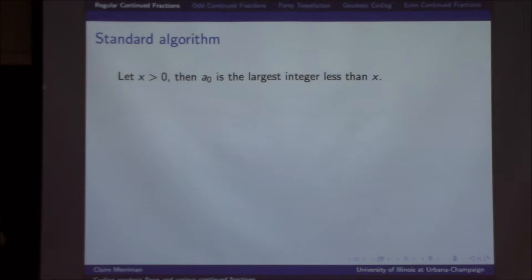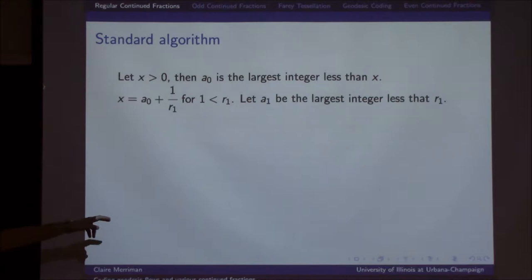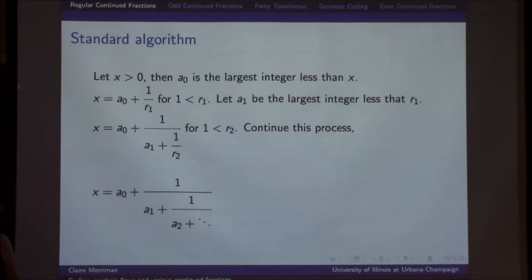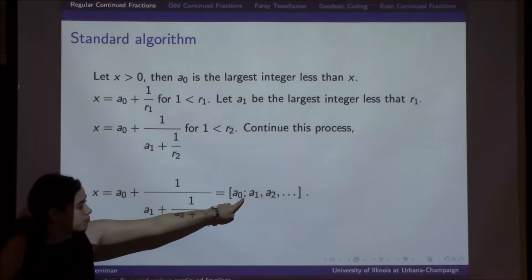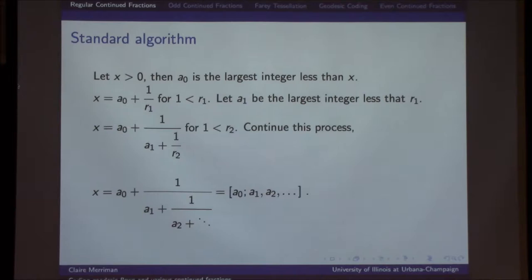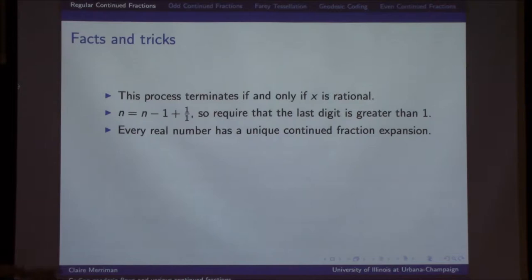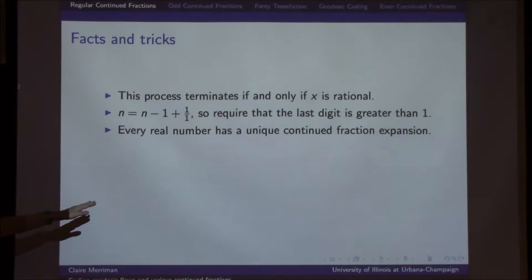If we have some number greater than 0, we call A0 the largest integer less than x, and we rewrite x as A0 plus 1 over R1 for some remainder. We do the same for R1, getting A0 plus 1 over A1 plus some remainder, and we keep going. We use bracket notation, with the integer part before a semicolon. This process terminates if and only if x is rational. Every irrational number has a unique continued fraction expansion, and if the last digit has to be greater than 1, our rationals are also unique.